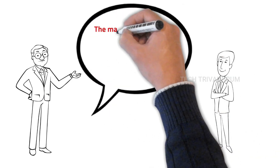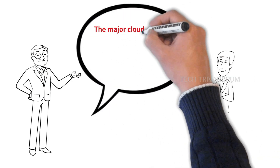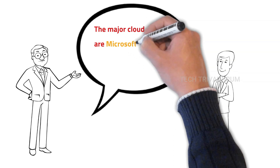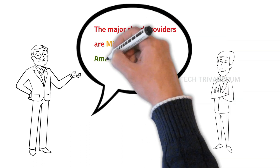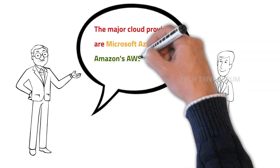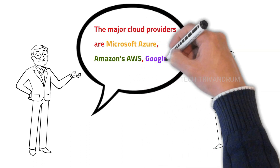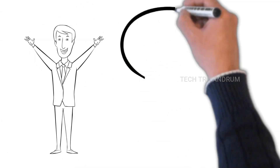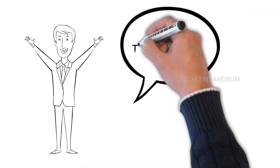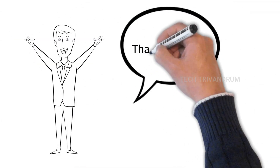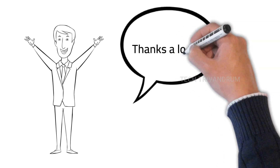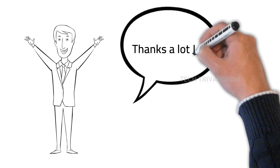Jeff tells Adam about the major cloud providers — Microsoft Azure, Amazon's AWS, and Google Cloud. Adam became very happy and worry-free, because he now knows that his problem can be easily solved using cloud computing.